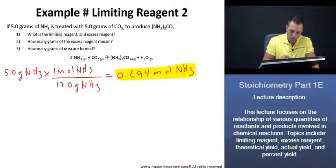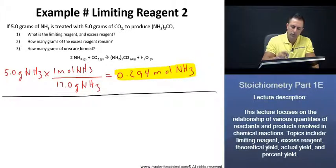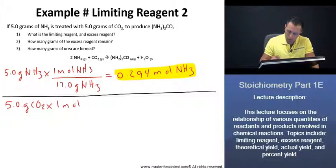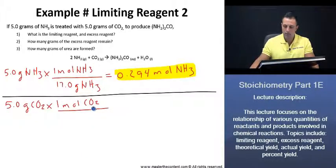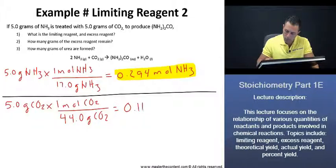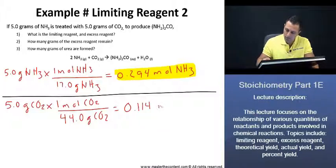Next, we'll find the amount of moles of carbon dioxide. We initially have 5 grams as well. If we take 5 grams of carbon dioxide, we know that the molar mass of carbon dioxide is going to be 16 plus 16 plus 12 from the carbon, giving us 44 grams per mole. Once we equate this, we get 0.114 moles of carbon dioxide.